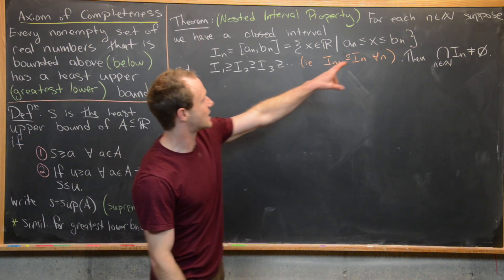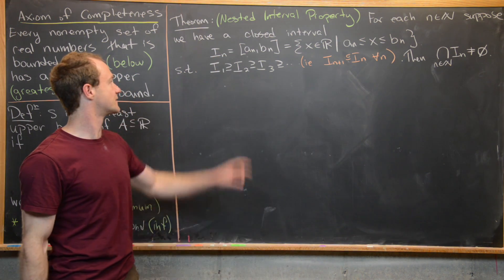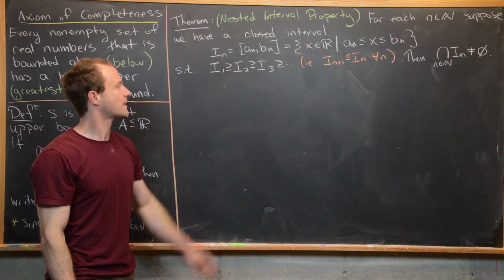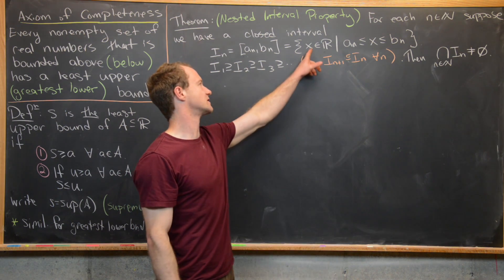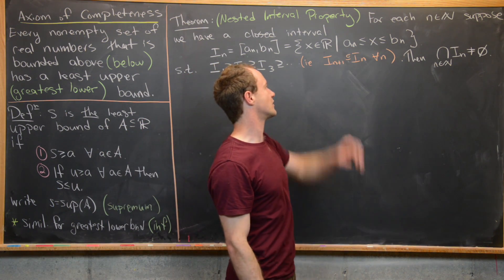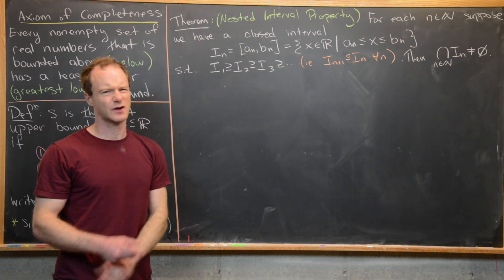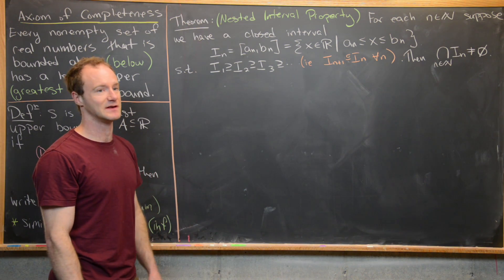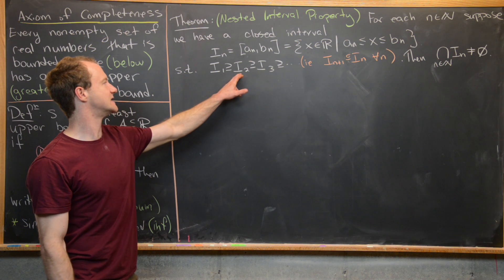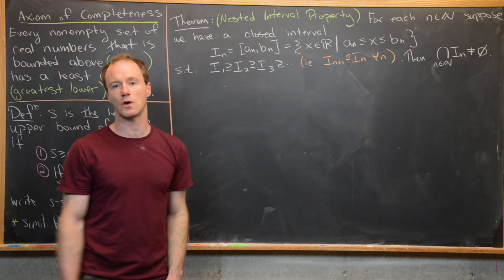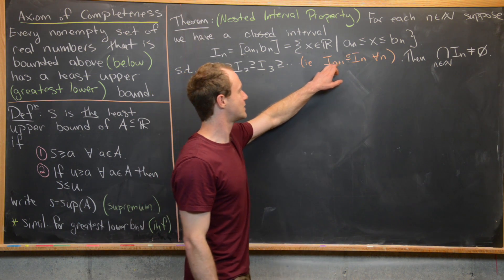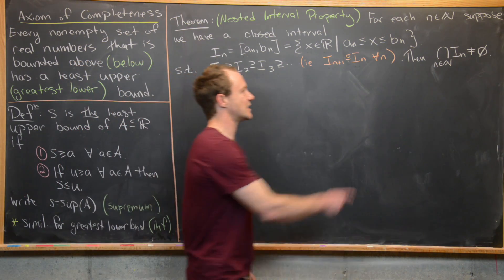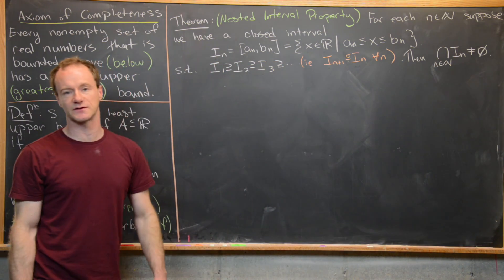For all natural numbers N, suppose we have a closed interval I sub N, bounded on the left by A sub N and on the right by B sub N — all real numbers X with A sub N ≤ X ≤ B sub N. These closed intervals must satisfy the containment I₁ ⊇ I₂ ⊇ I₃ and so on, i.e., I_{N+1} is contained within I_N for all natural numbers. The conclusion is that the intersection of all these intervals is non-empty.